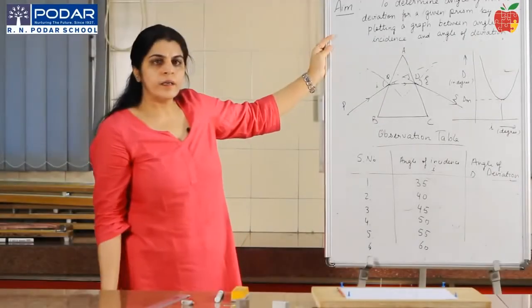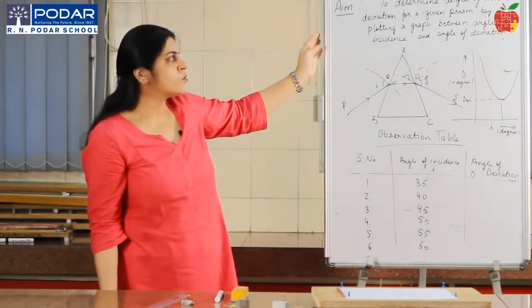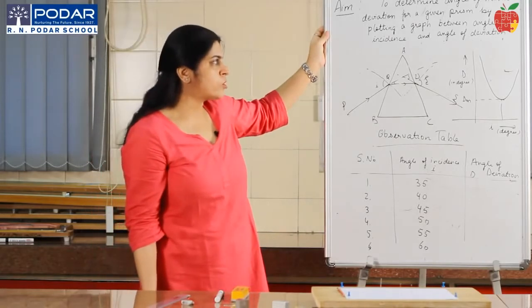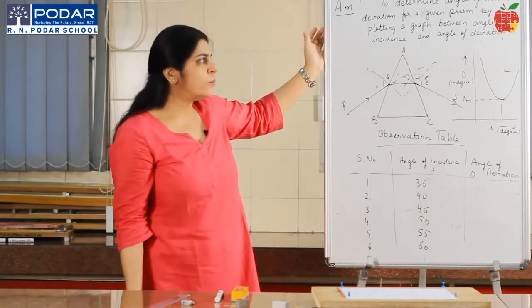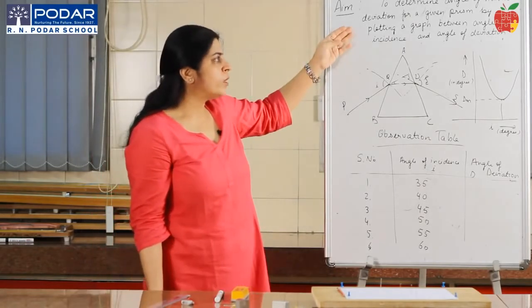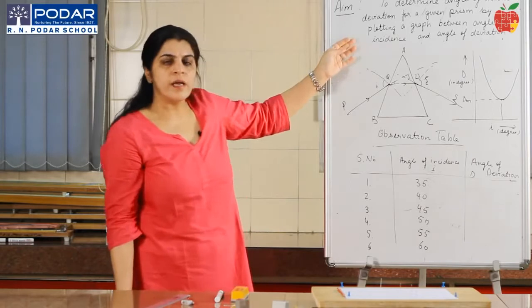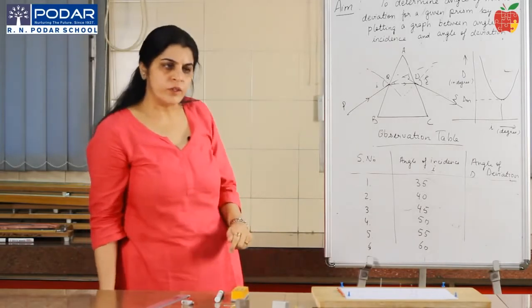Students, here we are experimenters to determine the angle of minimum deviation for a given prism by plotting a graph between angle of incidence and angle of deviation.